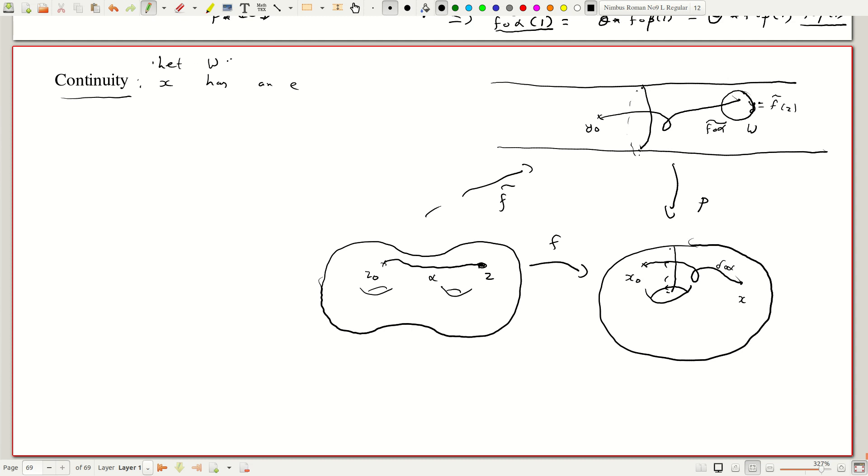Let w, this is contained in y open and y which is f tilde of z is a point in w.